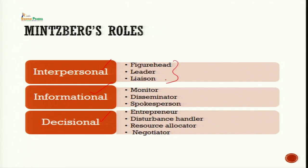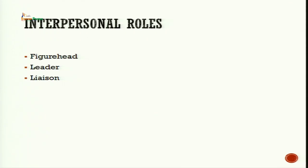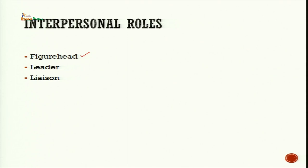The first three roles — figurehead, leader and liaison — come under the interpersonal category. Interpersonal here means relationships within and outside the organization. The very first role is figurehead. A figurehead is a symbolic head of the organization — the leader who takes responsibility to show the direction or path to organizational members. As figurehead, a manager is responsible for official and social duties that reflect their status and authority. It is about building a strong relationship with peers and subordinates.